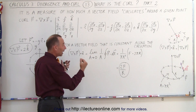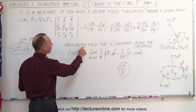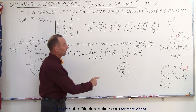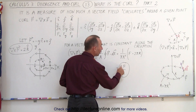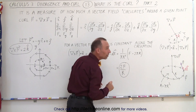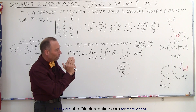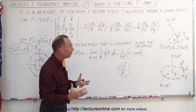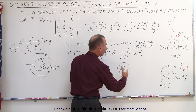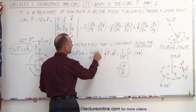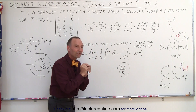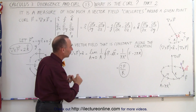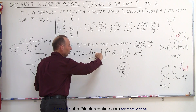We have to put a caveat on this: for a vector field that is constant along the path of circulation, the magnitude of the curl will be twice the magnitude of the vector field divided by the radius. As we make the radius smaller and smaller, for a constant vector field it doesn't matter how big the radius is. But if there is a non-linear change in the magnitude of the vector field, we need to apply this limit as the area goes to zero.